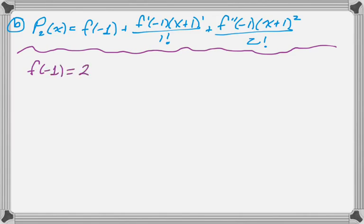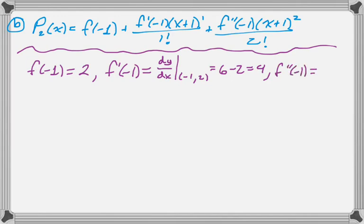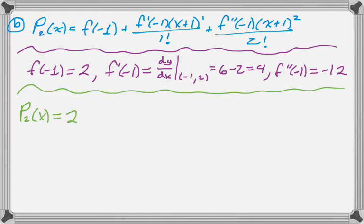So now I just need to collect some things that I can substitute in. So I know f(-1) is 2, that was given. I know that f'(-1) is dy/dx evaluated at (-1, 2), which is 4. And they just give us the second derivative, which is nice of them. And now we're just going to build our polynomial. So we start with 2 plus 4(x+1), and then minus 12(x+1)² over 2 factorial, which, that was the question, so mission accomplished.